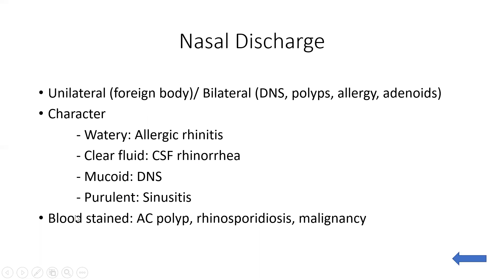If the discharge is blood-stained, it can be because of antrochoanal polyp, rhinosporidiosis, or any malignancy of the nose or paranasal sinuses. Rhinosporidiosis is a fungal infection of the nose in which granulation tissue is formed; the fungus responsible is Rhinosporidium seeberi. So these three are the causes of blood-stained nasal discharge.